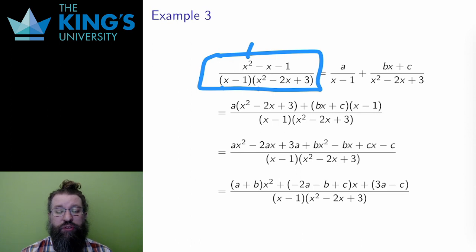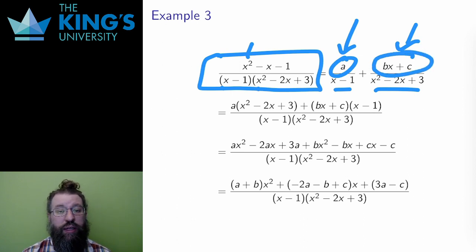The decomposition into partial fractions will have two pieces, one with the linear term and one with the quadratic term. As before, the numerator of the linear term must just be a constant. The numerator of the quadratic, though, can be another linear term. That will still result in a proper fraction over a quadratic. Linear is degree 1, quadratic is degree 2. Therefore, I'm going to have an a over the first, but a bx plus c with two unknowns b and c over the second.